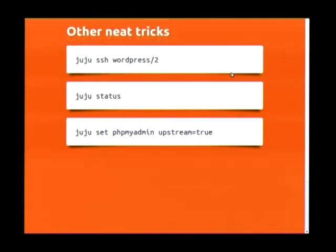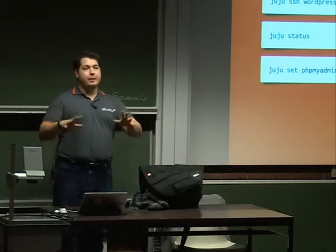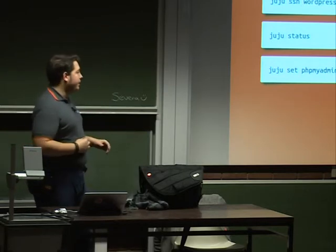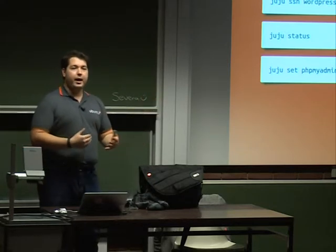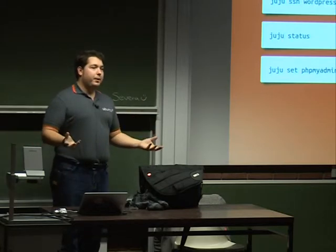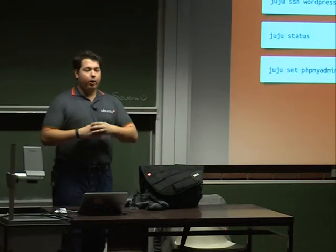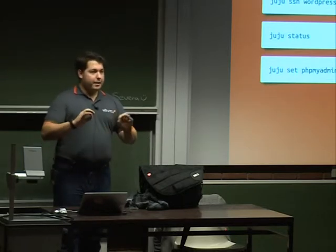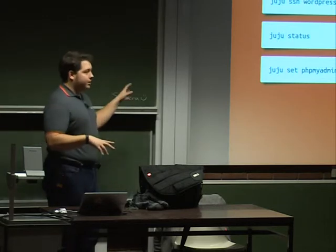Some additional cool tricks: Juju SSH is a quick way to access a node — for instance, MediaWiki/0 will give you an SSH tunnel into that unit. Here's another example of a configuration parameter that completely changes how the charm operates. If I deploy phpAdmin to inspect the database temporarily, I can choose which version to use. By default it'll install what's in the archive, which is a few releases behind upstream. But I can set a configuration flag which will have the charm download the latest version, uninstall the package, set up the latest from upstream, and reconfigure all configuration options against it.